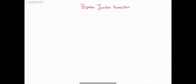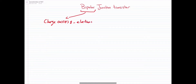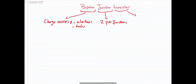Hello everybody! Today we are going to study the bipolar junction transistor. The term 'bipolar' comes from the charge carriers of this transistor, which are electrons and holes. The 'junction' refers to the two PN junctions, and 'transistor' is a combination of transfer plus resistor. It will be discussed further later in our lecture.